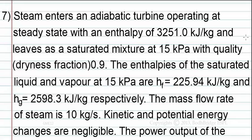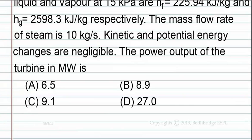The mass flow rate of steam is 10 kg per second. Kinetic and potential energy changes are negligible. The power output of the turbine in megawatts is: